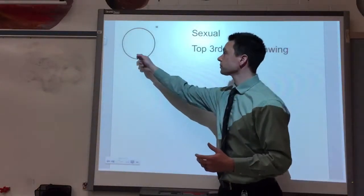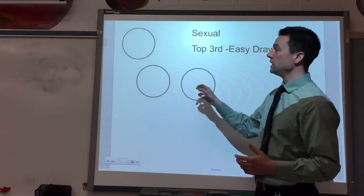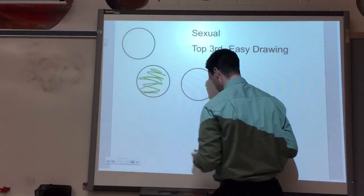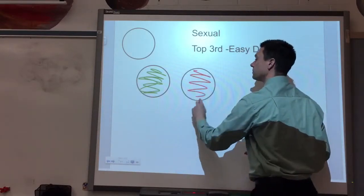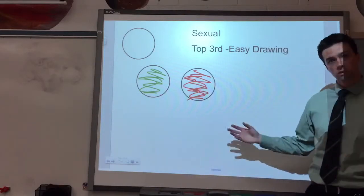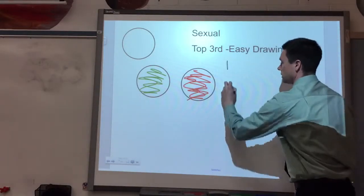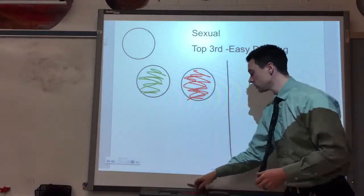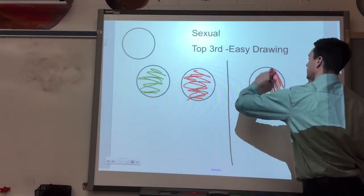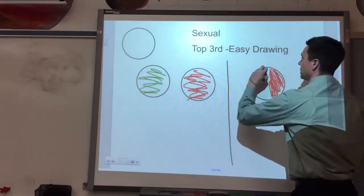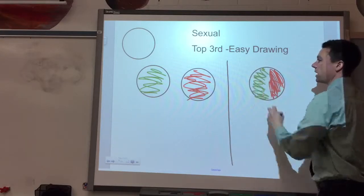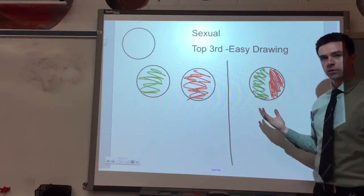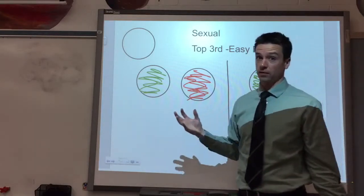For sexual reproduction, you need two parents — that's the main difference right off the bat. You have Parent A whose cells look one way, and Parent B whose cells look another way. They come together and make a new child who is exactly half mom and exactly half dad. That's why you are half your mom and half your dad. You start with a mom and a dad and end up with an organism that is 50-50.